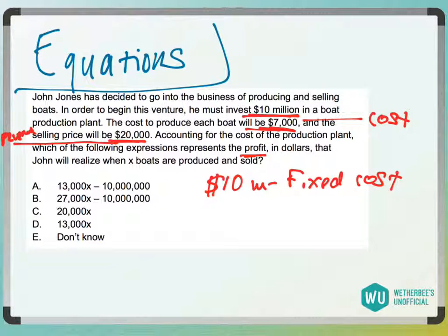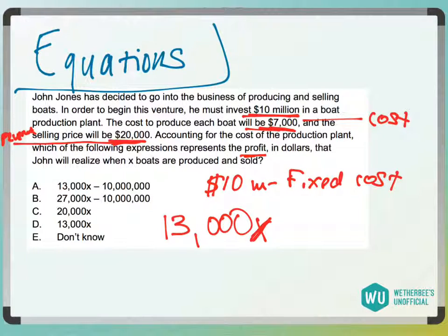So in this instance, I can sell them for $20,000, but it costs $7,000 to produce. So he's going to make $13,000 per boat. So $13,000 per X, but you can get rid of B and you can get rid of C.